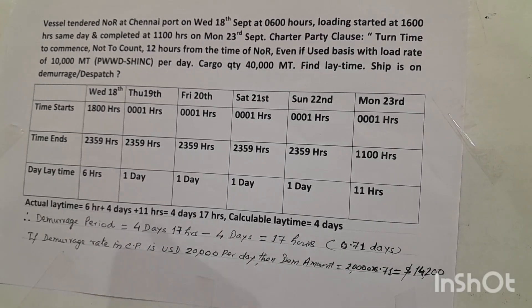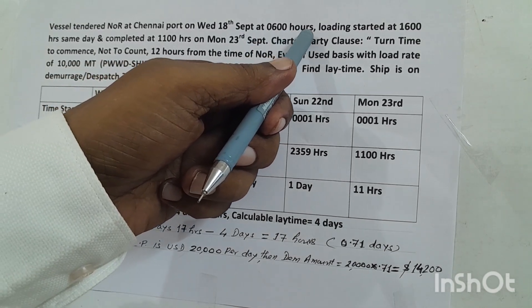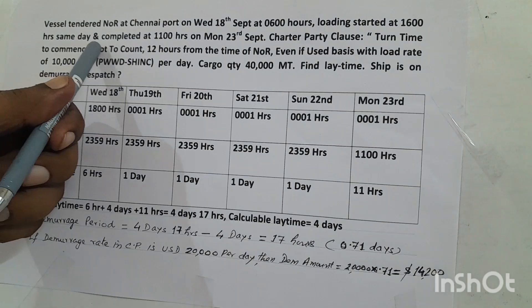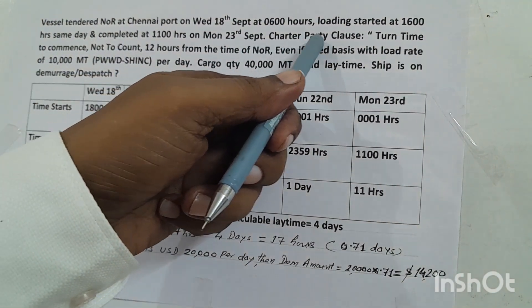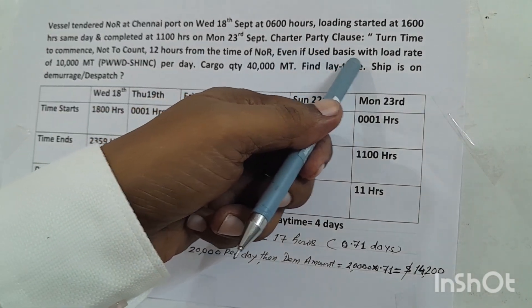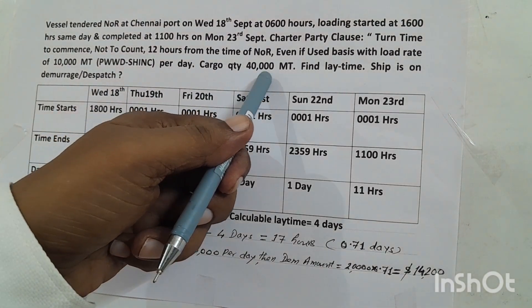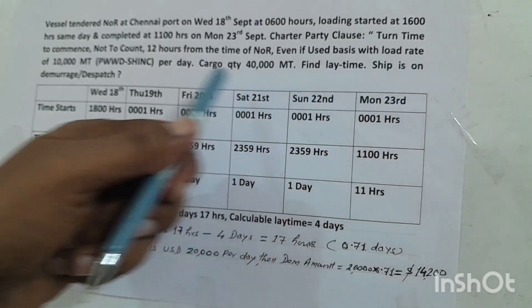Now we will solve a problem to see how laytime is calculated. Vessel tendered NOR at Chennai Port on Wednesday, 18 September at 0600 hours. Loading started at 1600 hours same day, completed 1100 hours on 23rd September. Charter party clause: turn time to commence 12 hours from NOR, even if used basis, with load rate of 10,000 tonnes PWWDSHINC per day. Cargo quantity: 40,000 metric tonnes. Find out laytime and whether the ship is on demurrage or dispatch.